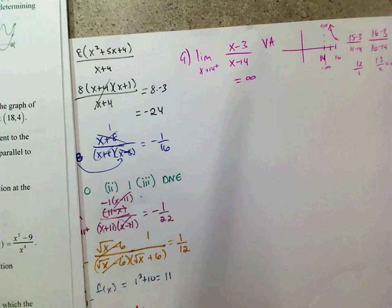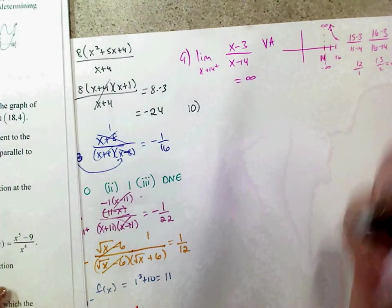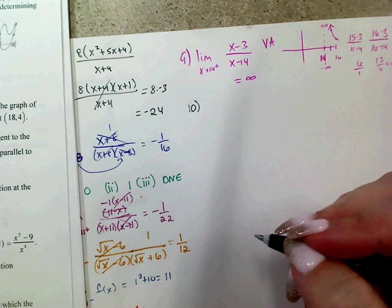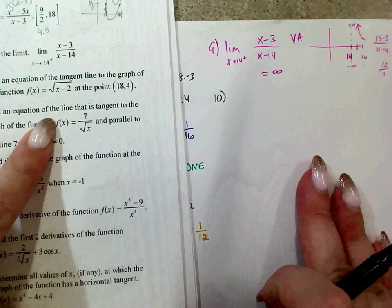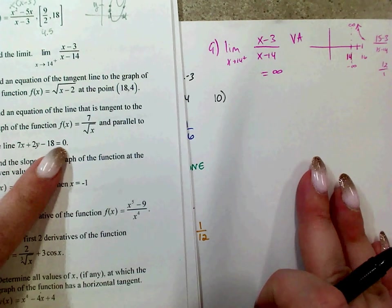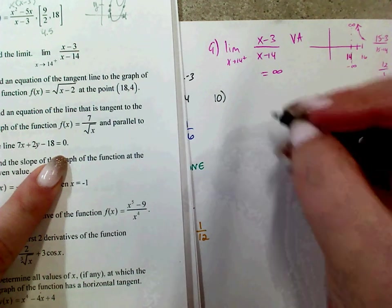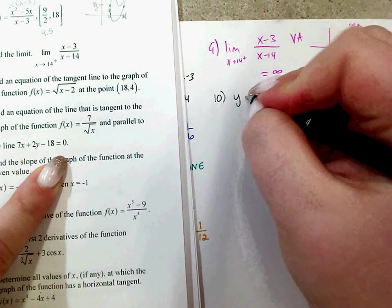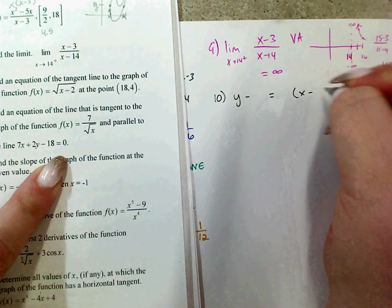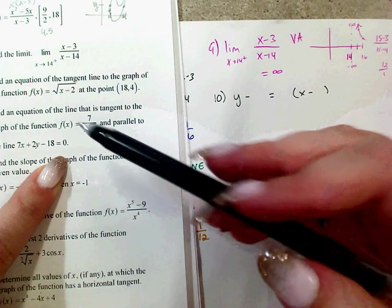Number 10: find the equation of the line tangent to the graph of the function and parallel to the given line. I need to find the slope of the given line. Converting to slope-intercept form: 7x plus 2y minus 18 equals 0 gives 2y equals negative 7x plus 18, so y equals negative 7/2 x plus 9. The slope is negative 7/2.